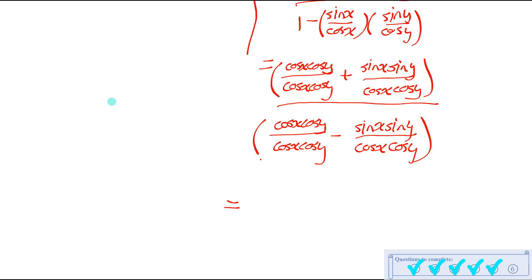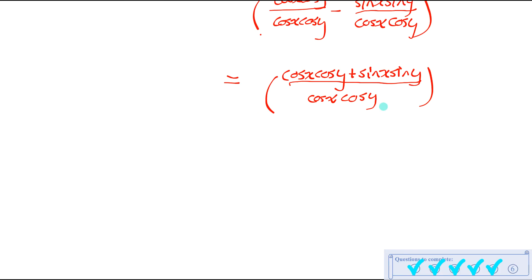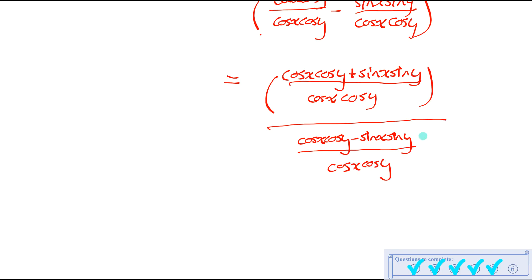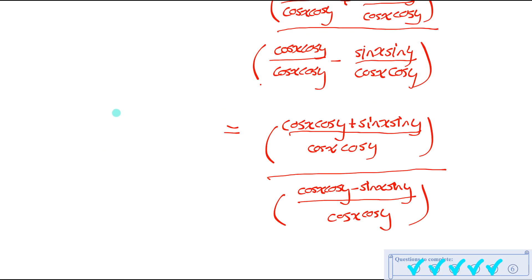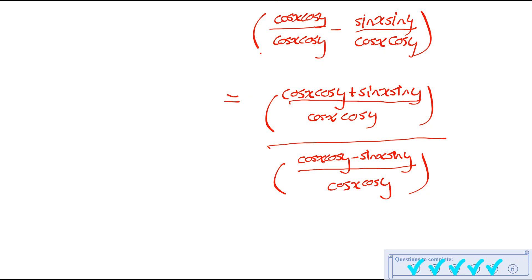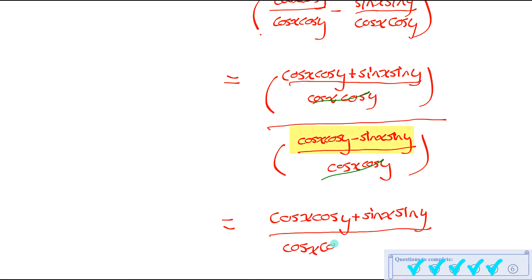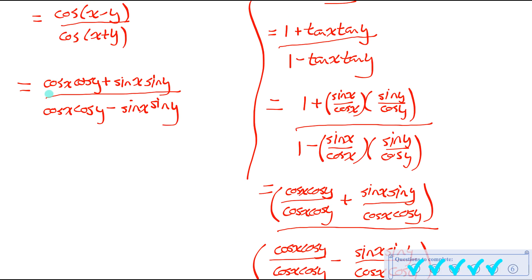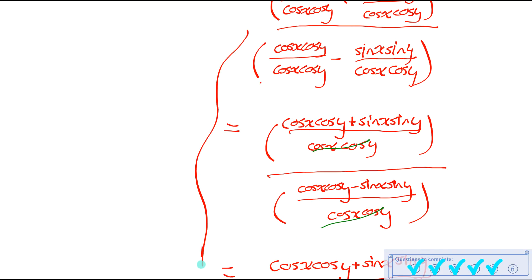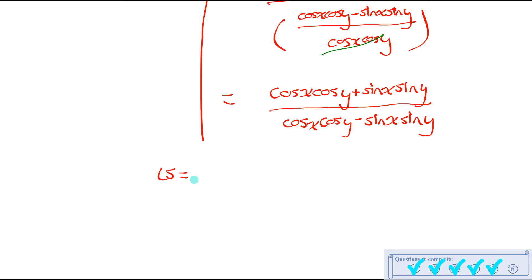Now in the numerator and denominator, I have fractions being added with common denominators, so I combine them. When dividing fractions, you flip and multiply — and since both have cos x·cos y as the denominator, those cancel out. We're left with (cos x·cos y plus sin x·sin y) over (cos x·cos y minus sin x·sin y). Looking back at where we started on the left side, that is exactly what we have. So we have finally proven this identity — left side equals right side.